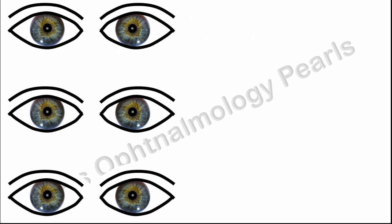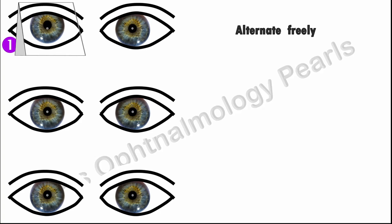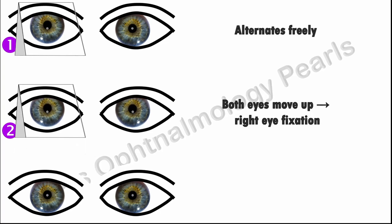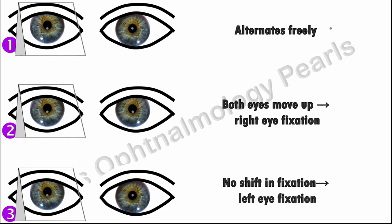The prism is first placed in front of the right eye, and one of three scenarios plays out. Scenario one: the two eyes alternate fixation freely. Scenario two: both eyes move up, indicating right eye fixation. Scenario three: there is no shift in fixation, indicating left eye fixation. In scenario one, freely alternating fixation indicates no fixation preference and the test may be terminated. If a fixation preference is found, then the prism is placed over the left eye and the behavior of the eyes is noted.